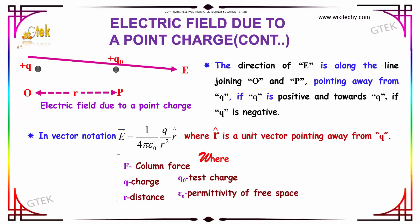Let us discuss the direction of E, which is along the line joining O and P. You can see here, pointing away from Q, then we can say Q is positive. If it is towards Q, then Q is negative.